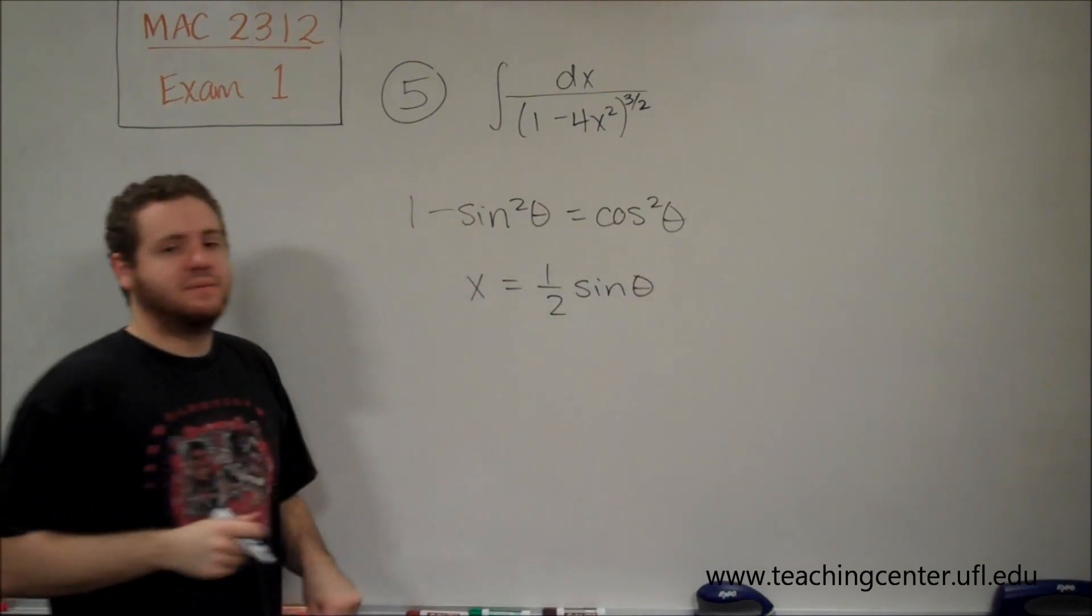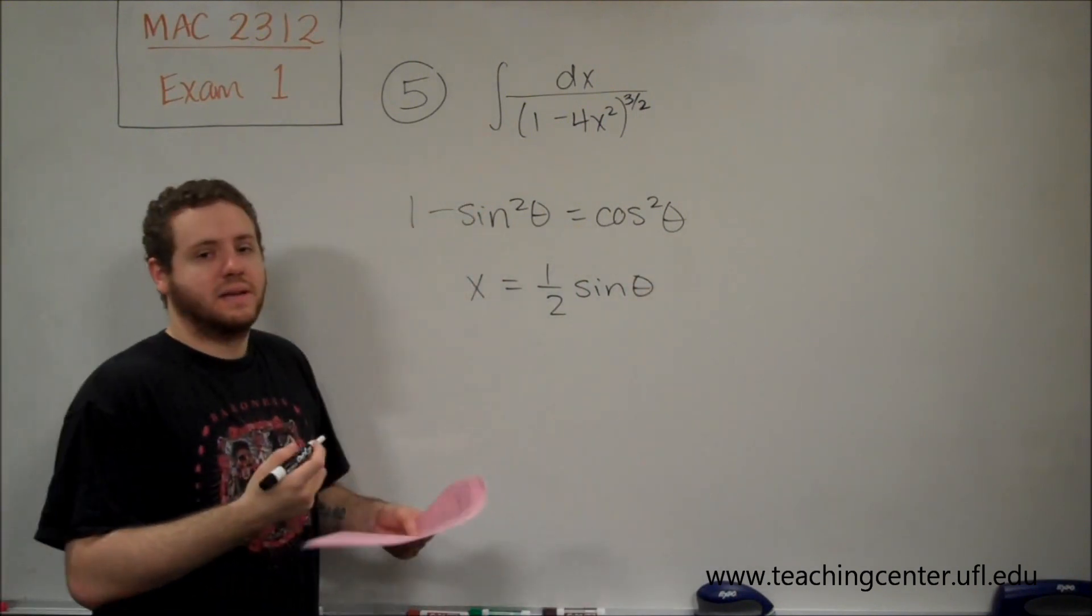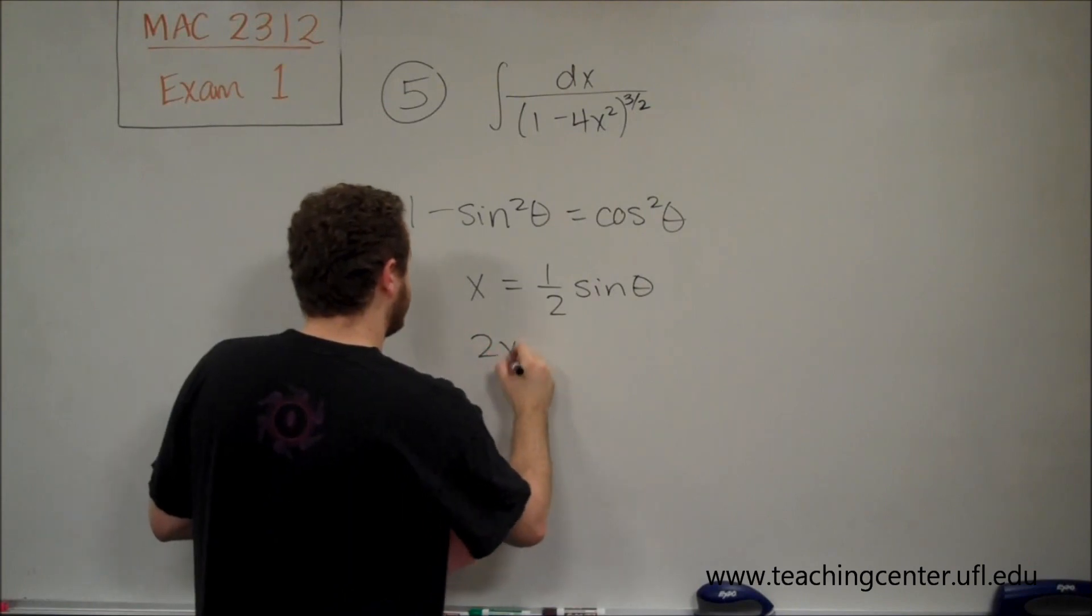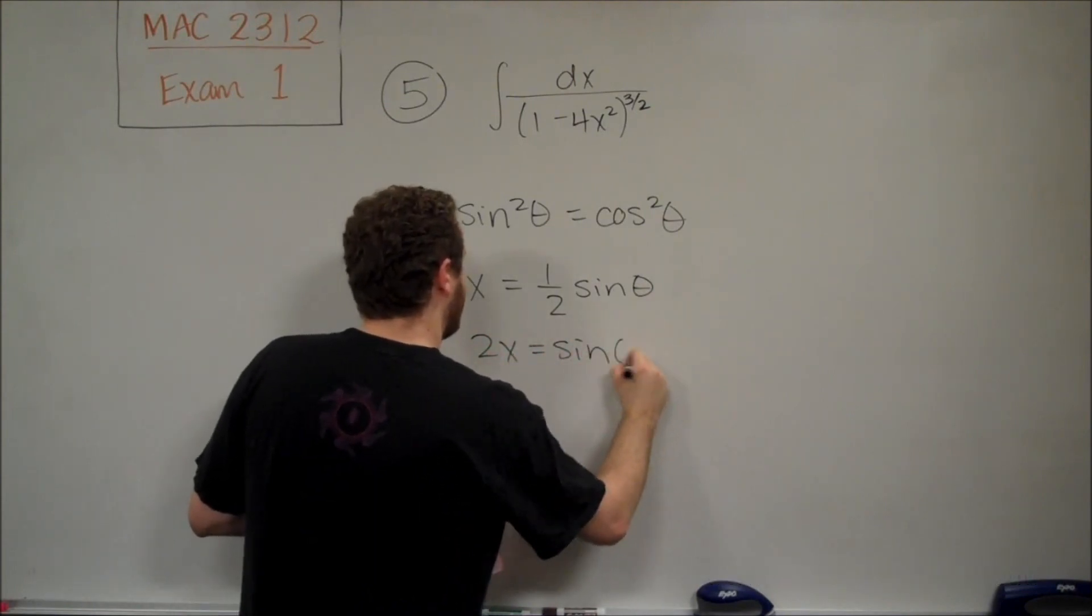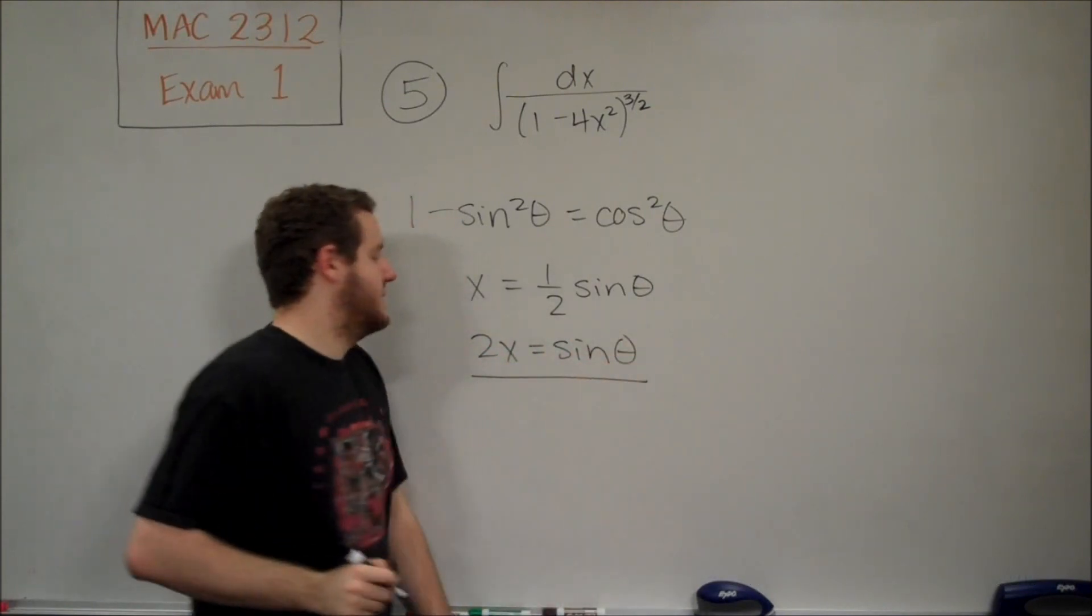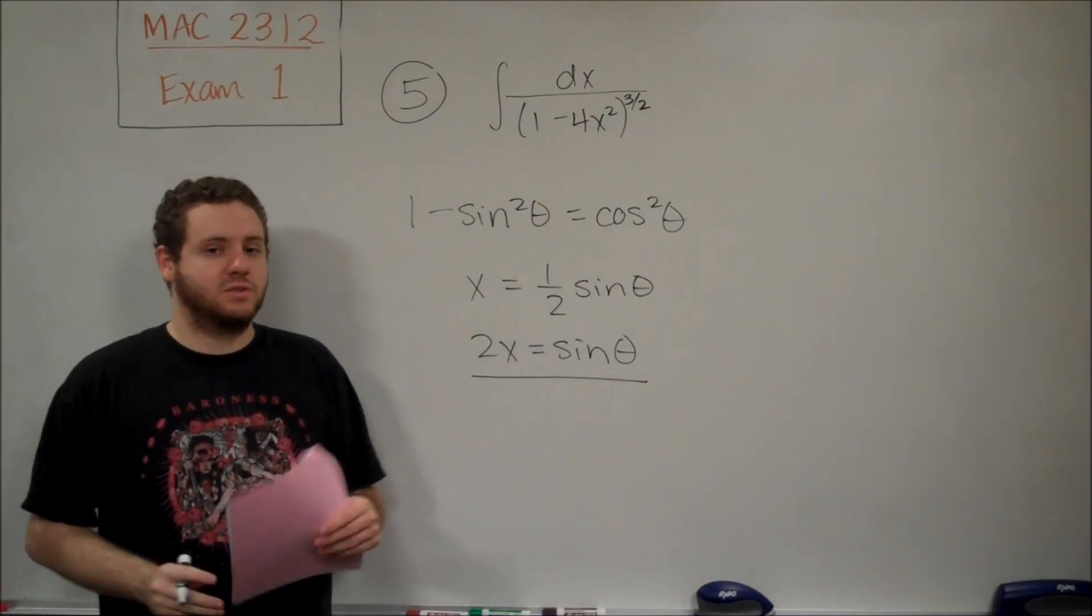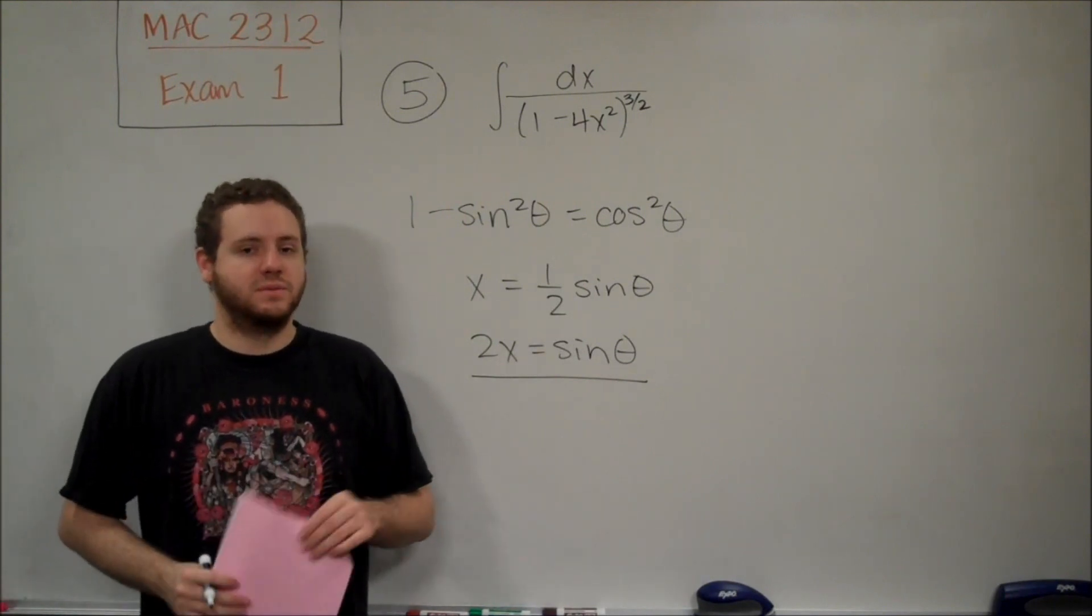So we're going to have x equals 1 half sine theta, and on the test, it's rewritten as 2x equals sine theta. So that's the trig substitution we would need to use in this problem.